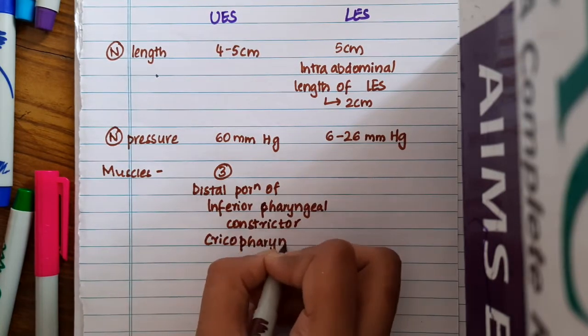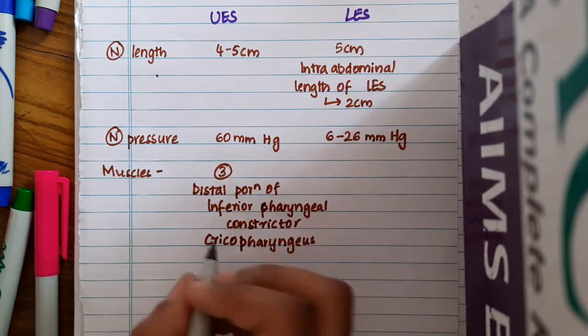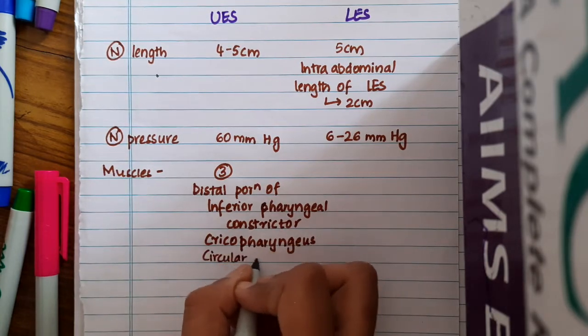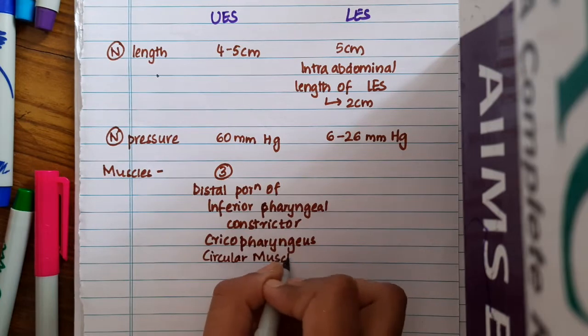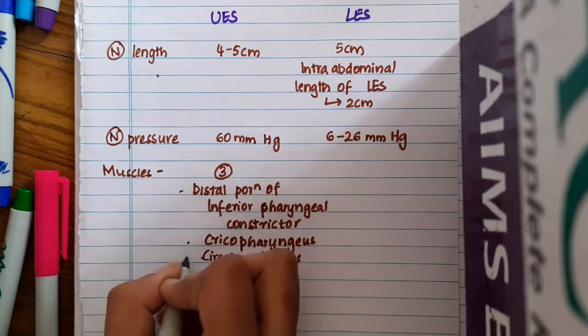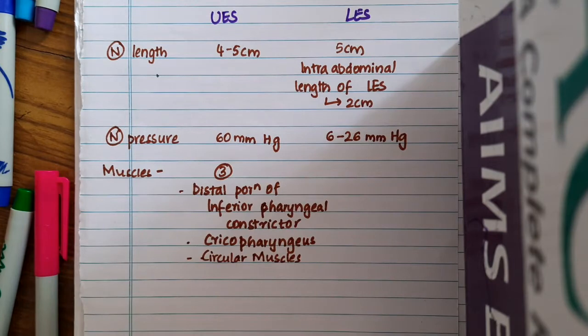And this also includes the circular muscles which are present in the proximal esophageal sphincter. So, these are the different muscles of upper esophageal sphincter.